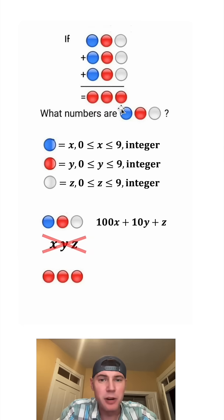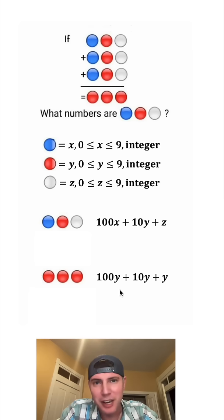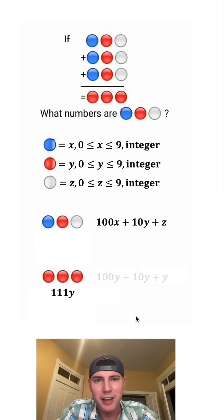And then same thing for the red, red, red down here. We can't just call this y, y, y. It's got to be 100y plus 10y plus y. And we can combine like terms here to get 111y. So these three red dots can be called 111y.